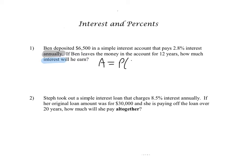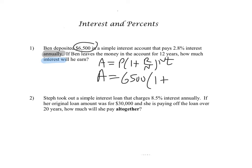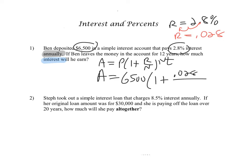A equals P parentheses 1 plus R over N, raised to the N times T power. We're going to plug in our values. The principal is $6,500. R is 2.8% interest, so we move the decimal point two places to the left — R is 0.028. The question says the interest is compounded annually, meaning one time a year, so our N value is 1, raised to N times T.